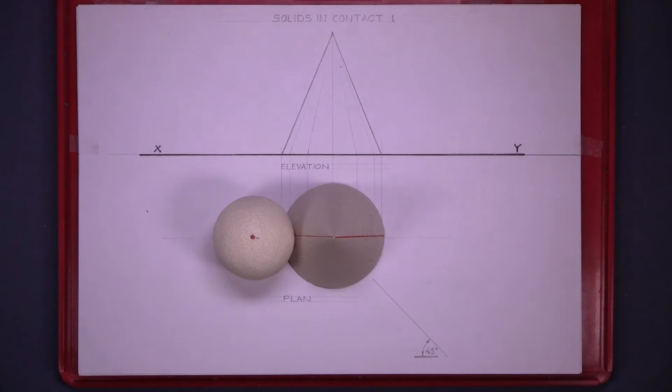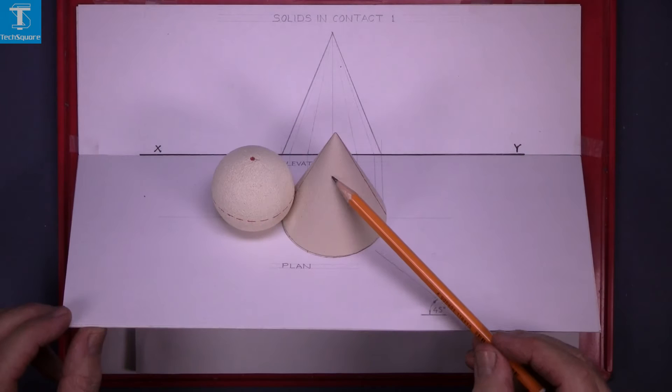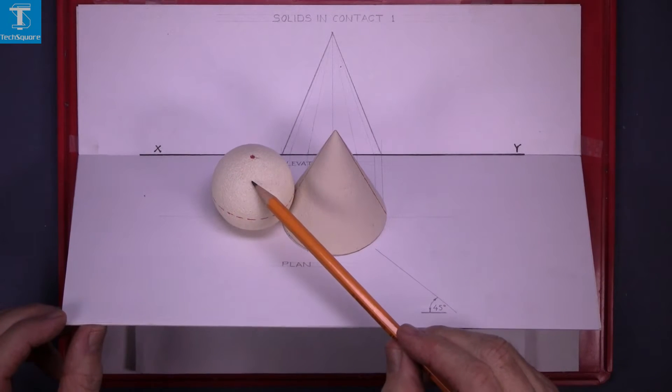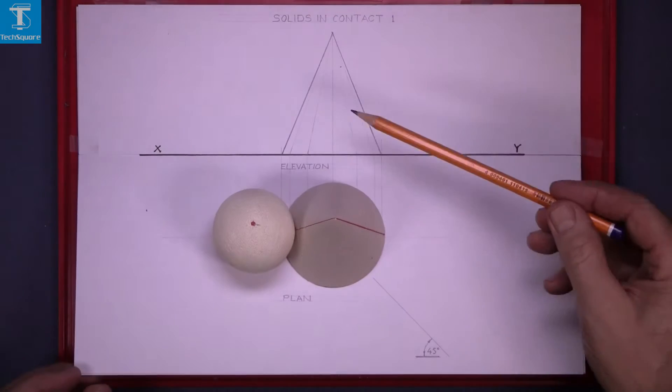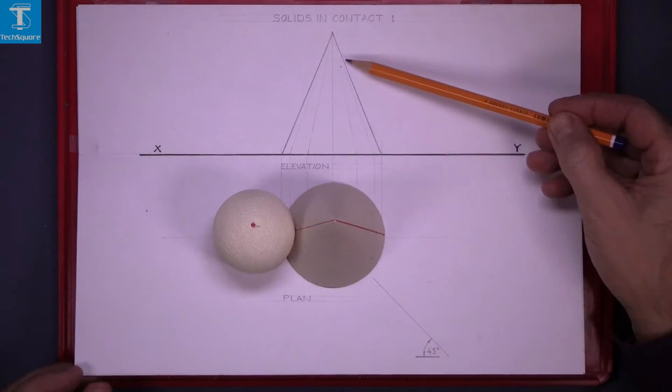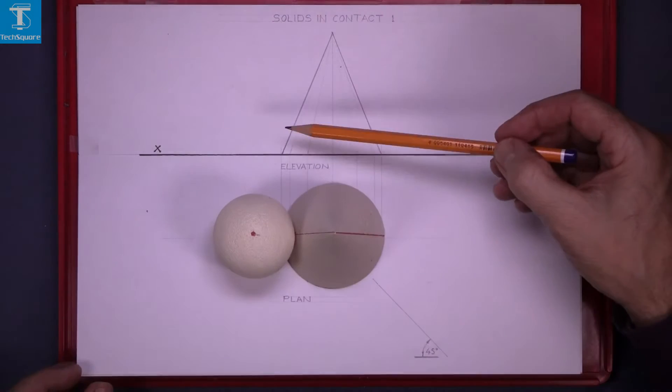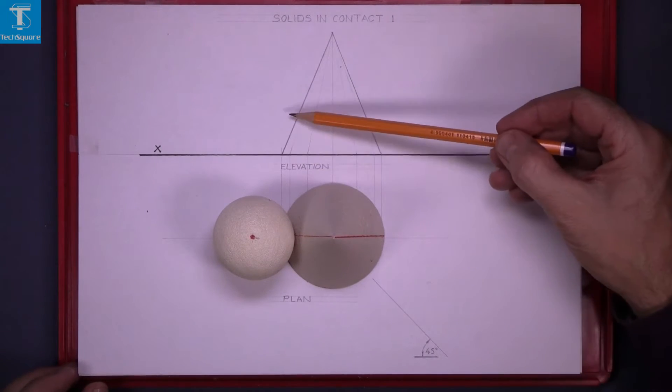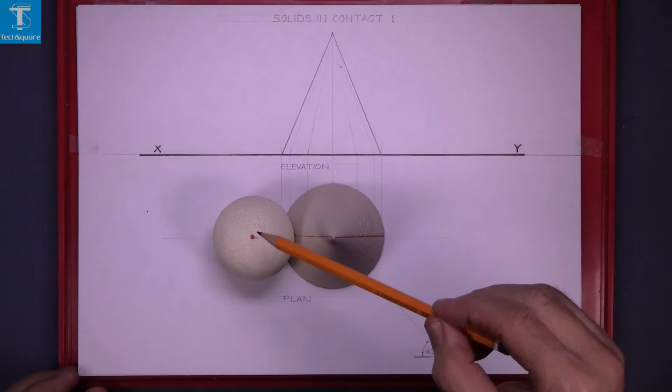Solids in contact 1. Here we have two solids, a cone and a sphere, and they're in contact at a point. We're also given the elevation and we're asked to draw the elevation of the sphere and then project the plan down.